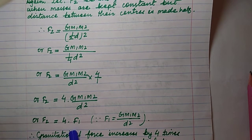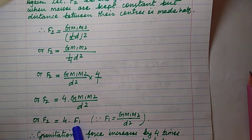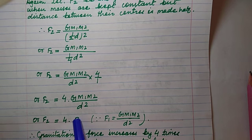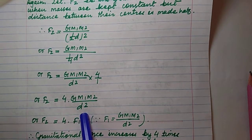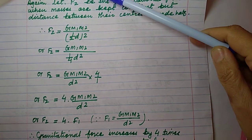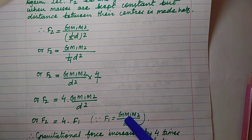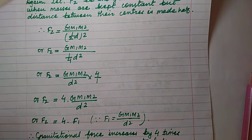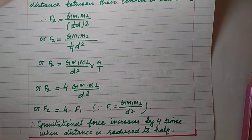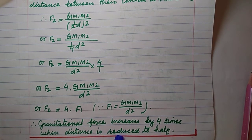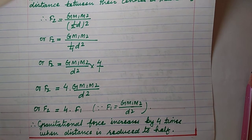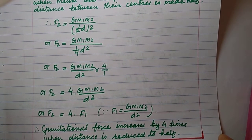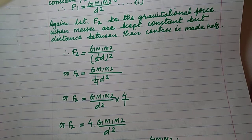Therefore, gravitational force increases by 4 times when distance is reduced to half, keeping masses constant. The closer the bodies are, the more powerful — stronger — the gravitational force.